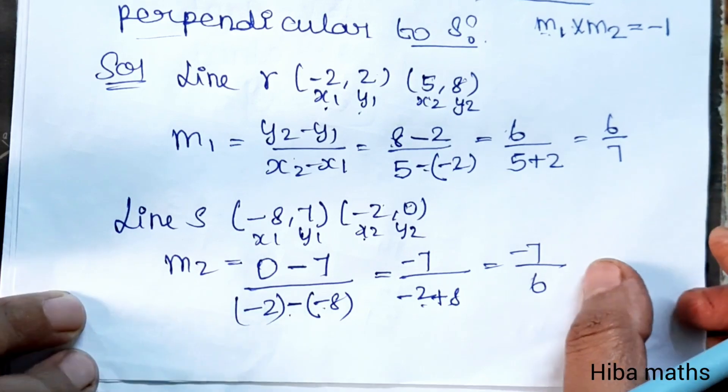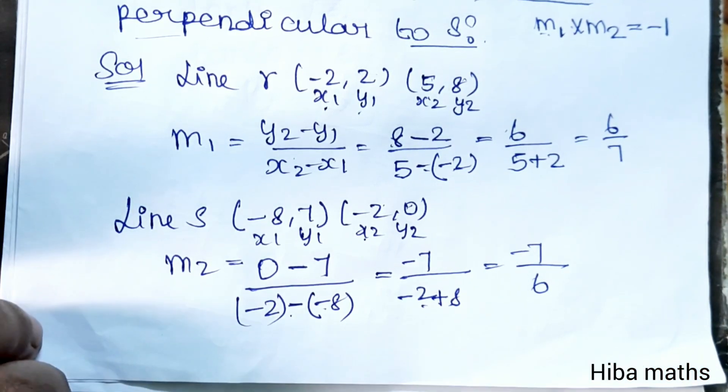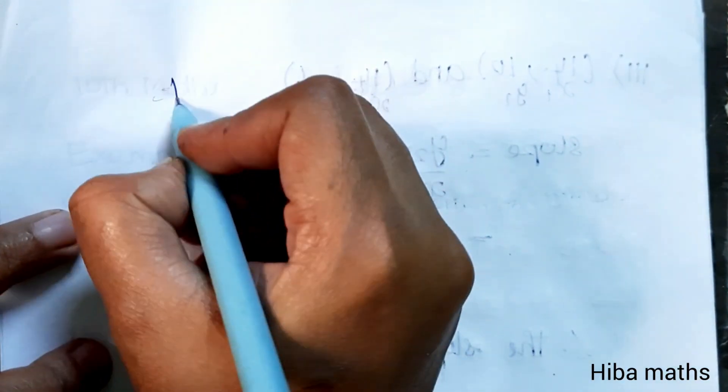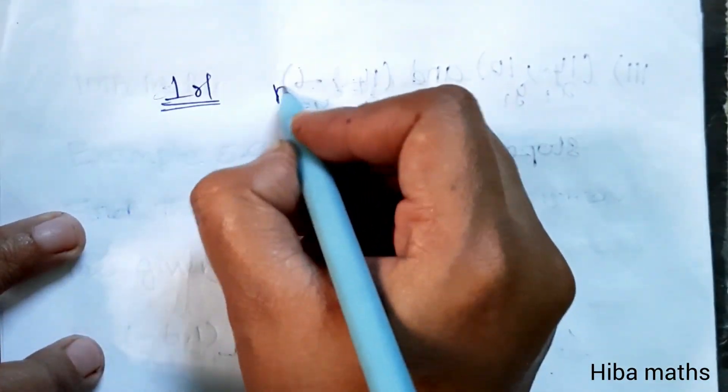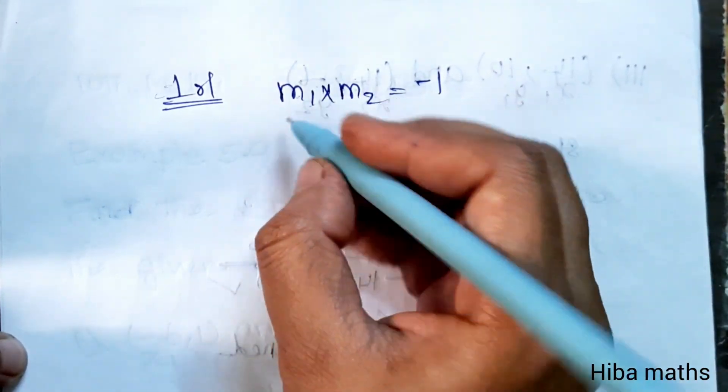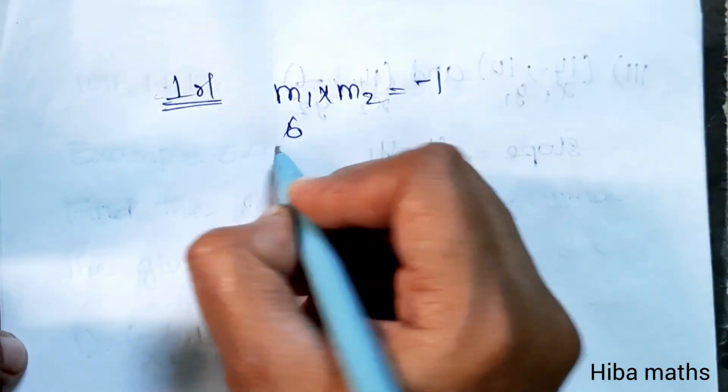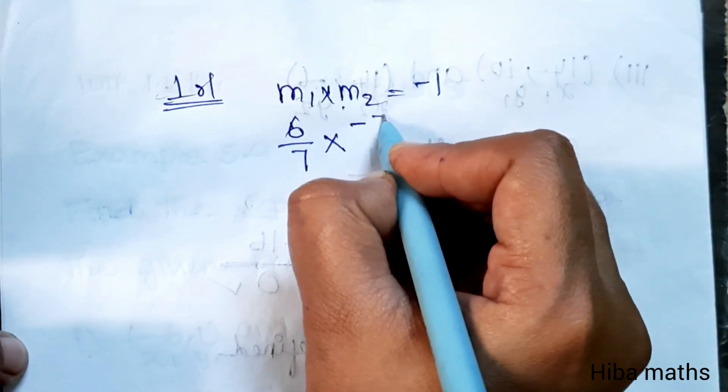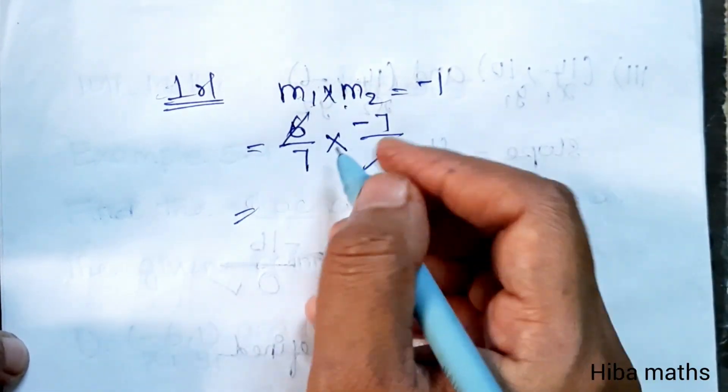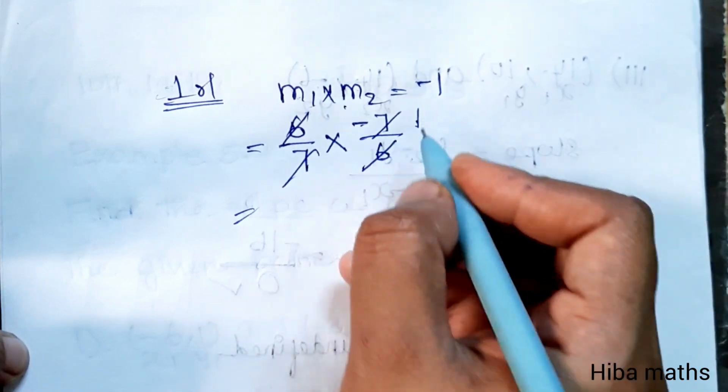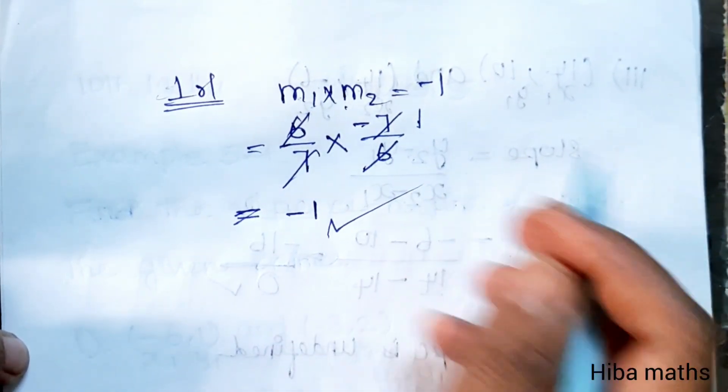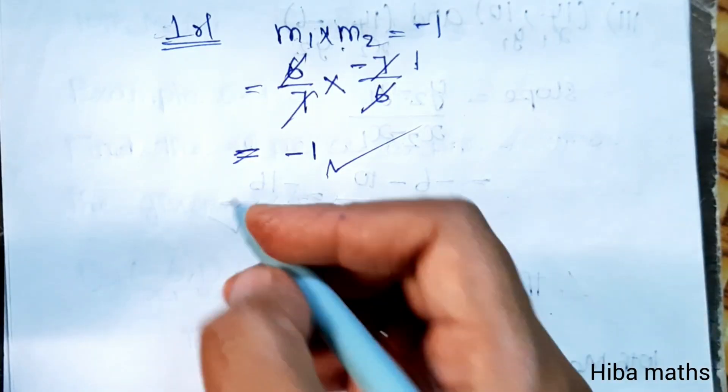Now checking: M1 times M2 equals 6/7 times -7/6. The 6 and 7 cancel, giving us -1. So the product of the two slopes equals -1, which is our answer. Therefore,